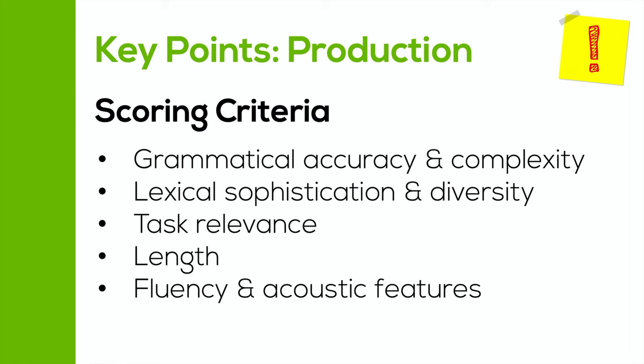It's great that the Duolingo team share this with us, because it means that you can focus your studies on these key points in order to improve your score. I'm going to go through these points individually, one by one, and give you some really useful tips on how you can improve on each part. I've combined some of them to make it easier, and we're going to go through them in this order: grammatical accuracy and complexity, then lexical sophistication and diversity, then task relevance, length, and fluency.